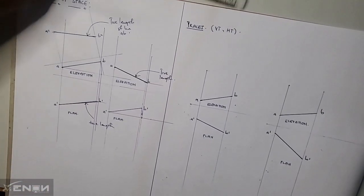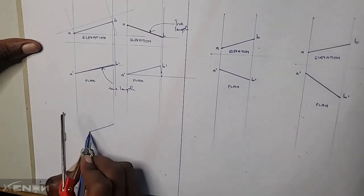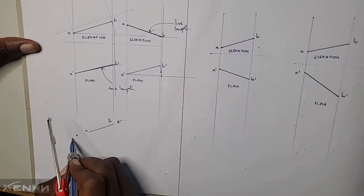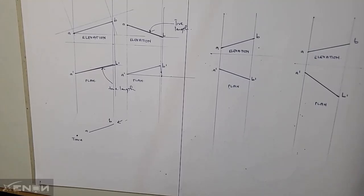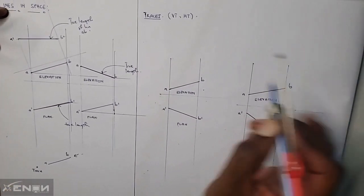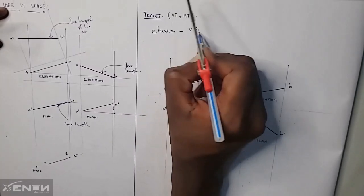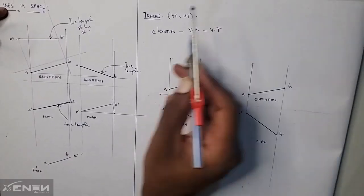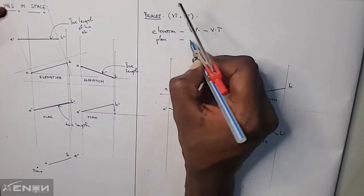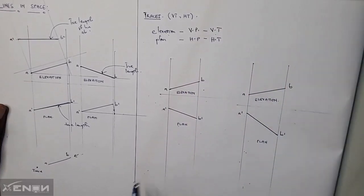Now let us proceed to determine the traces of these lines. The concept of a trace is simple: when we see through a line — say line AB — whatever we see is going to be a dot, and that dot is called the trace of line AB. Before we get into traces, know that for general lines in space: the elevation always corresponds to the vertical plane, and the vertical plane always corresponds to the vertical trace. The plan will always correspond to the horizontal plane and also to the horizontal trace.